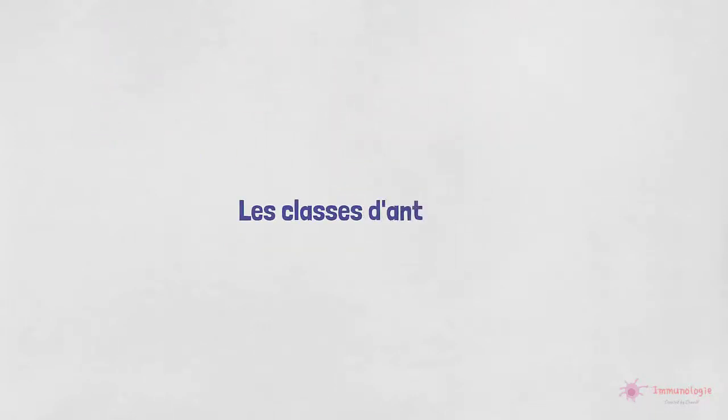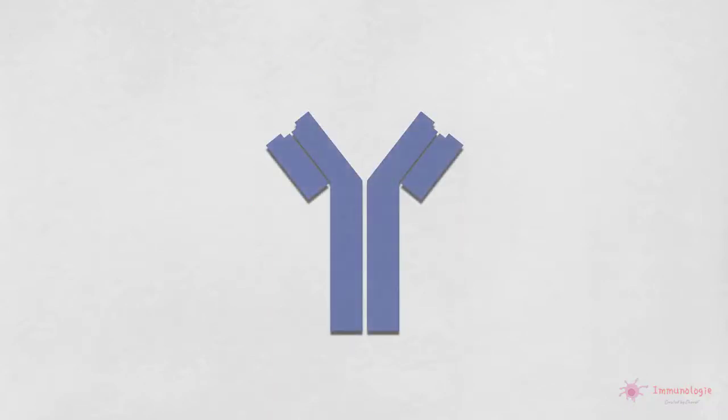Les classes d'anticorps. Tous les anticorps ont une structure centrale symétrique commune, de deux chaînes lourdes identiques liées de façon covalente et de deux chaînes légères identiques, chacune liée à l'une des chaînes lourdes. Les molécules d'anticorps peuvent être divisées en classes distinctes en fonction des différences dans la structure de leur région constante de la chaîne lourde.